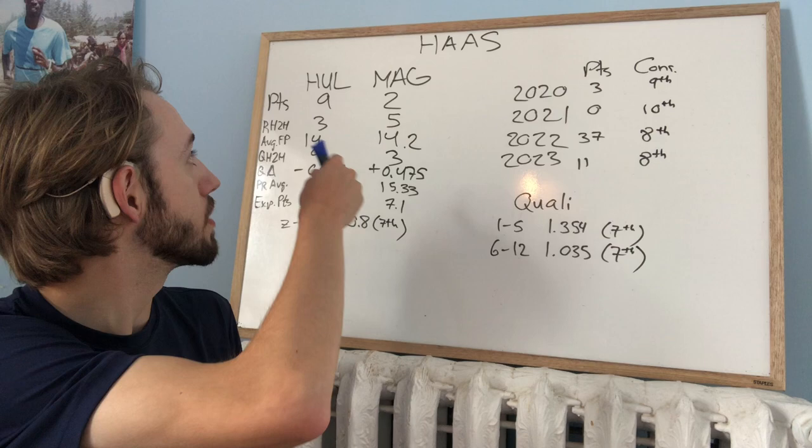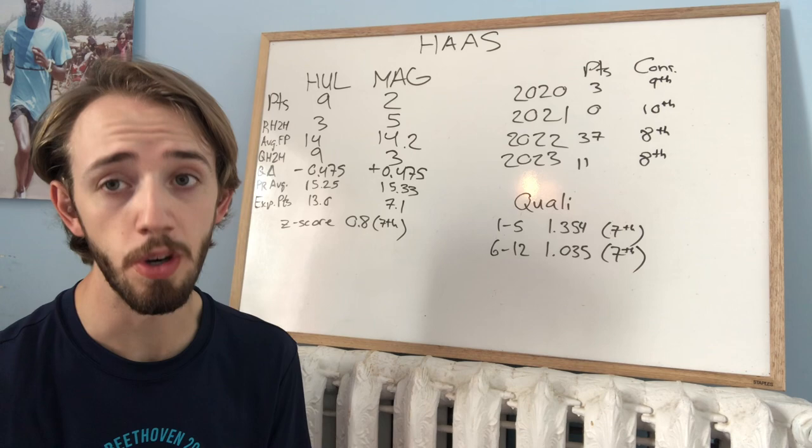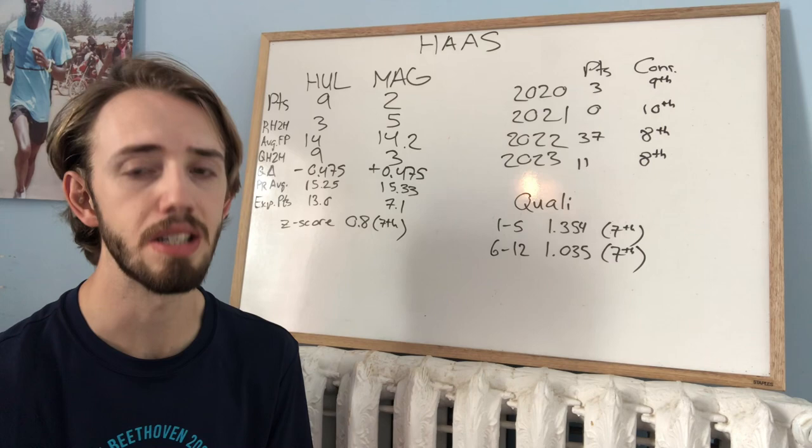In the average finishing position, very close, 14 for Hulkenberg and 14.2 for Magnussen. So in the races, Hulkenberg's definitely had much higher peaks. That 7th place in Australia got him 6 points, which is the majority of his points from this year. He got a couple points in the sprint as well, thanks to a great qualifying position. That being said, I do think that Magnussen has been a little bit more consistent in the races, though.